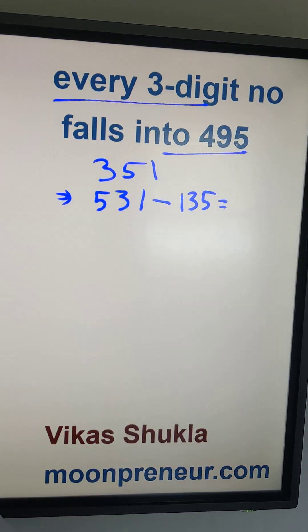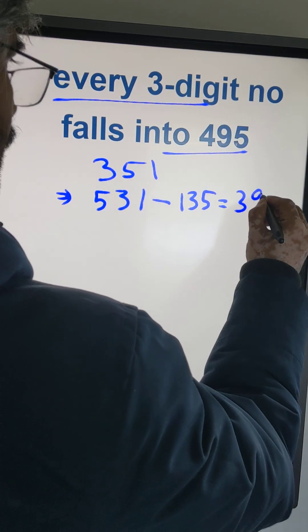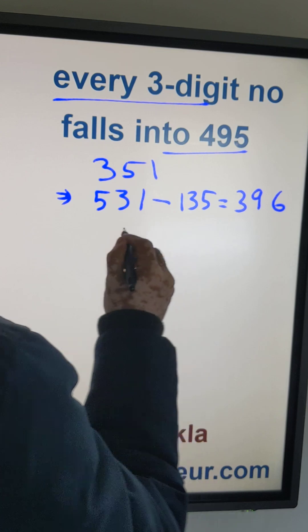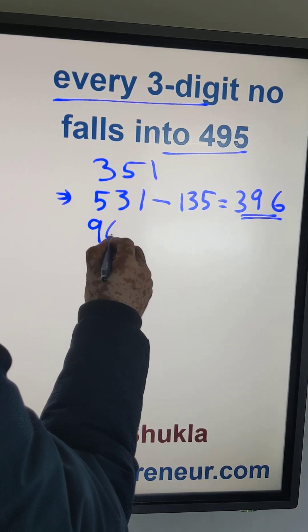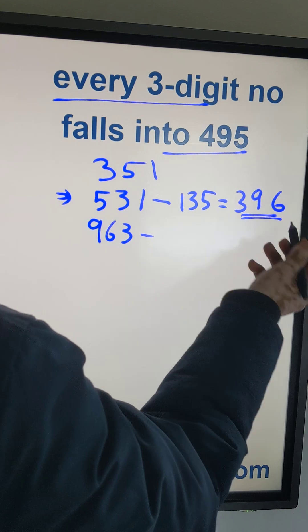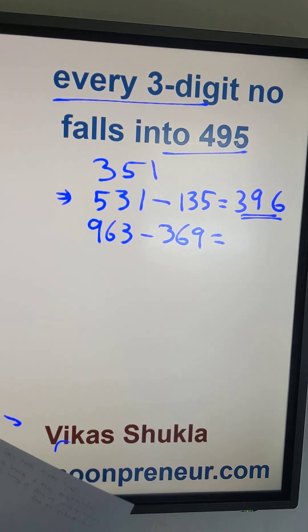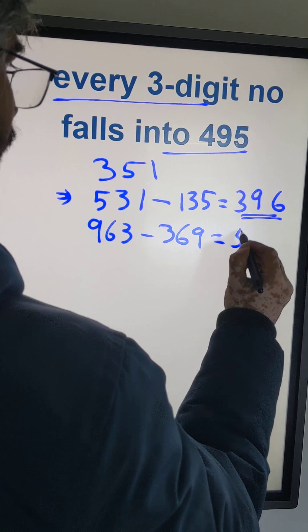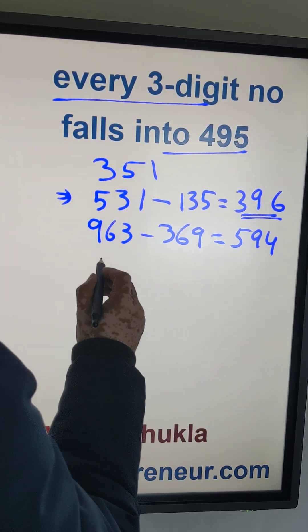And then if you do this math you get a number 396. Now repeat the same process with 396. The largest is 963 and the smallest by rearranging is 369. The difference is 594.